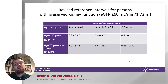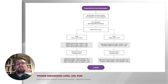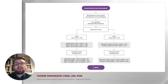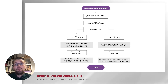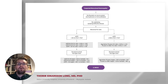Here we have established revised reference intervals for persons with preserved kidney function. Due to changes with age, we stratified the reference intervals by age below 70 years and 70 years and older. Based on our new reference intervals for FLC and FLC ratio for individuals with eGFR 60 and above, and our previously published renal reference intervals, we propose a new definition of light chain MGUS, where a person without underlying lymphoproliferative disease and negative serum protein electrophoresis and immunofixation for M protein is evaluated by kidney function and age, leading through references for different subgroups to determine whether the person has light chain MGUS or not.